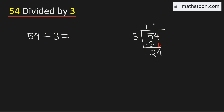And 3 times 8 is 24. Subtract, you get 0. Therefore, 54 divided by 3 is equal to 18, and this is our final answer.